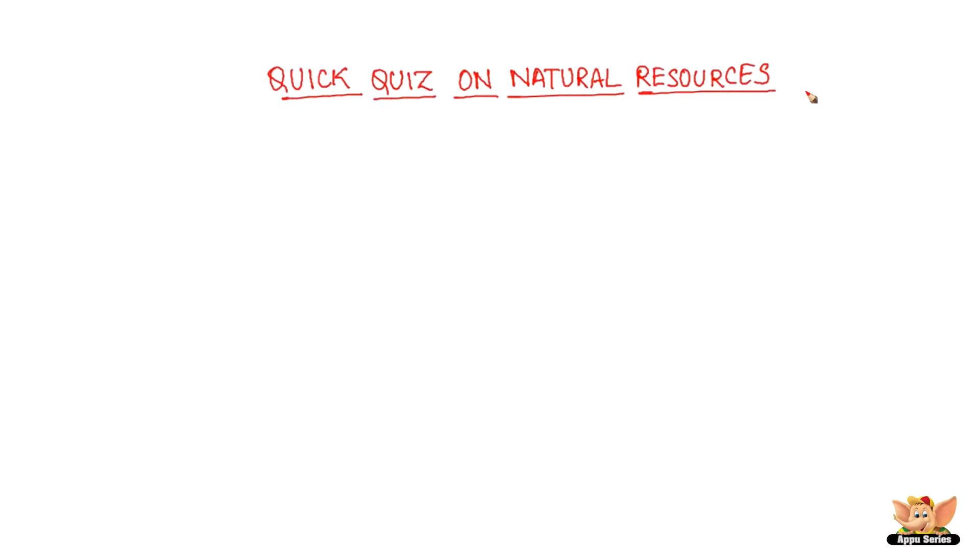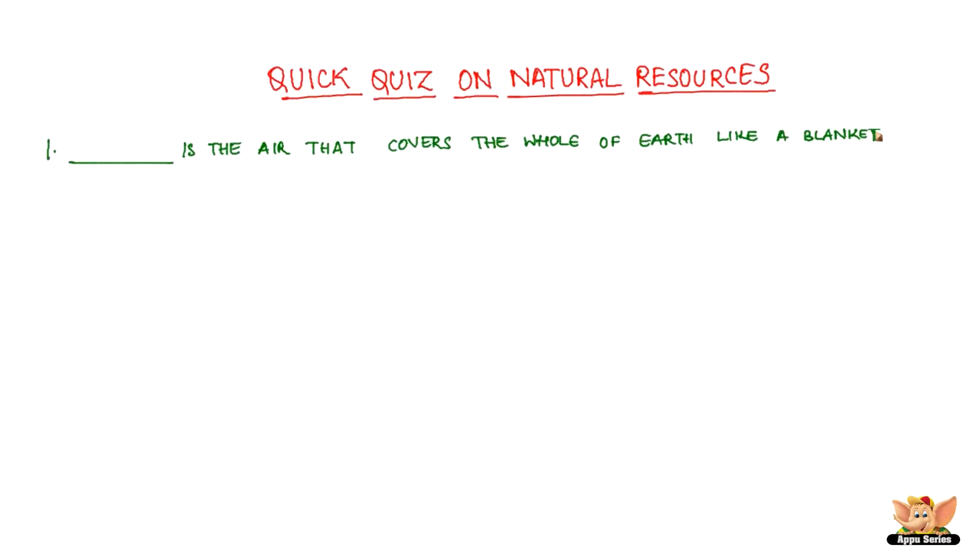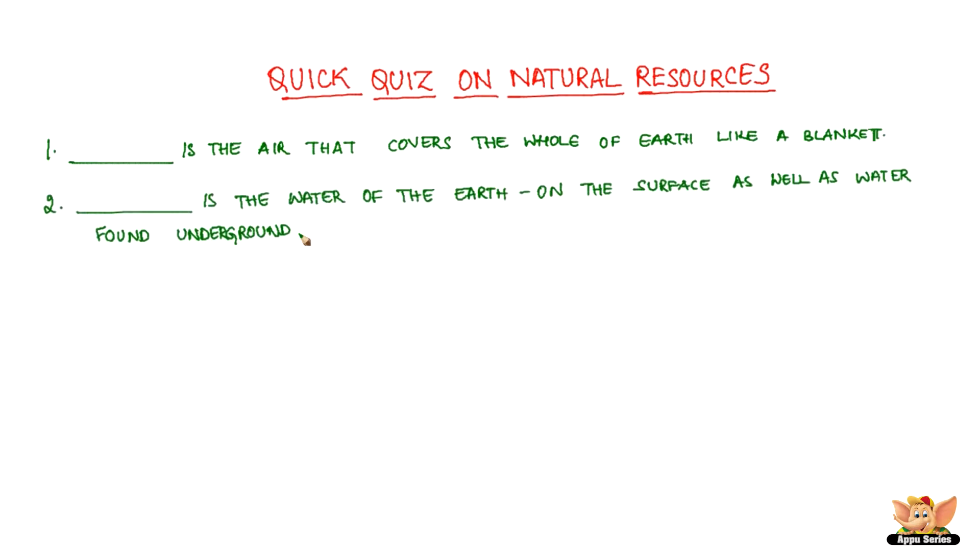Answer these. Dash is the air that covers the whole of the earth like a blanket. Dash is the water of the earth. Dash is the outer crust of the earth.